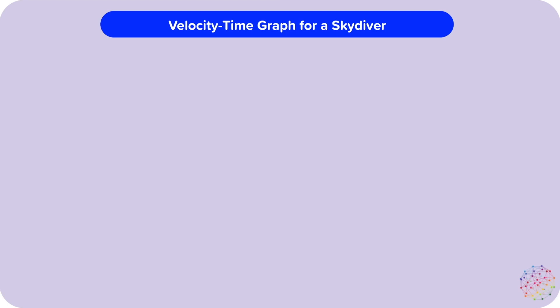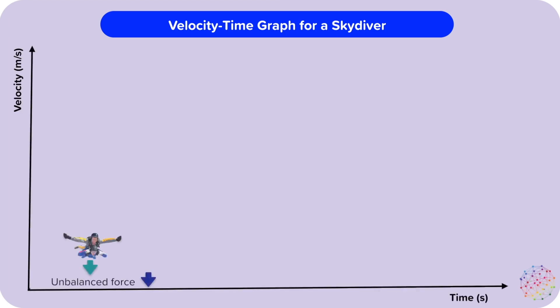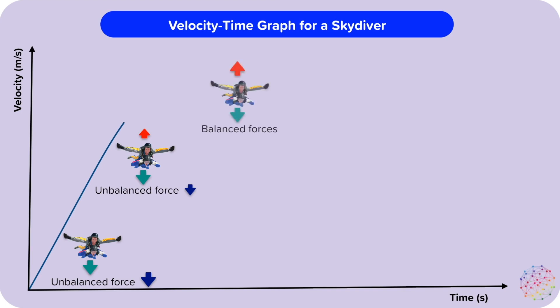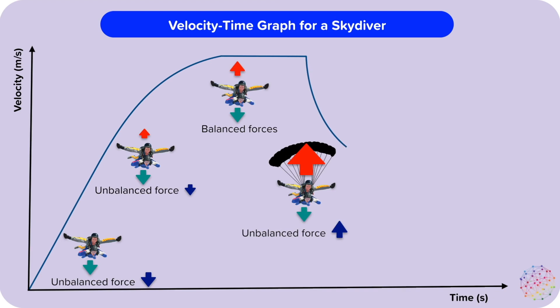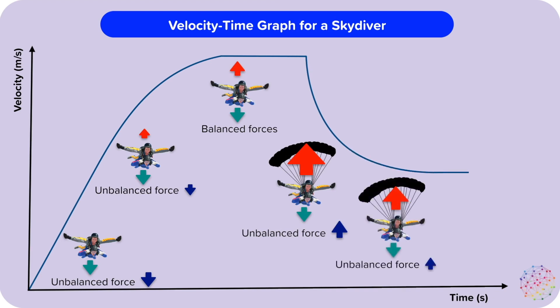Let's put that on a velocity-time graph. At first, we have our unbalanced force of weight acting downwards, then air resistance starts to increase, so our graph begins to curve. Finally we have balanced forces, so we flatline — and then we open the parachute. When we open the parachute, we have an unbalanced force upwards and that slows down our skydiver suddenly, so we get a drop in the graph. But the rate at which they're slowing down — the deceleration — decreases, because the unbalanced force decreases as air resistance decreases with speed, giving us a curve. Finally the forces are balanced again, so we get another flat line.